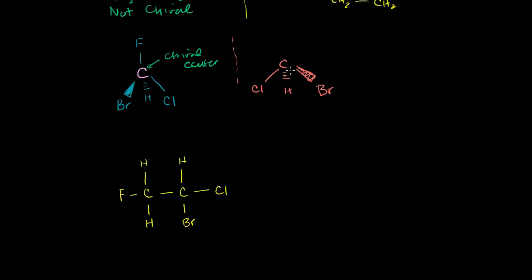It should also be clear that this is a chiral molecule. If you take its mirror image, you have the bromine on the right, the hydrogen still in back, and the fluorine above it. No matter how you try to rotate it, if you try to get the bromine to the other position, you will never be able to superimpose this molecule on the mirror image. So that is a chiral center, and this is a chiral molecule.